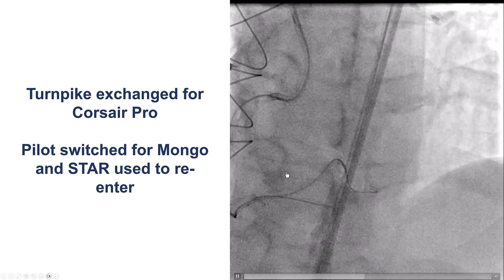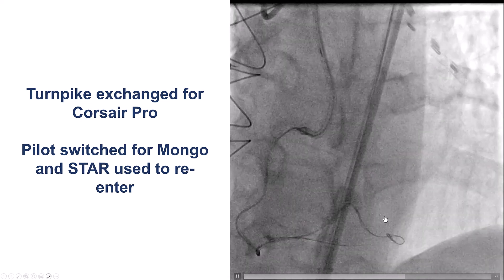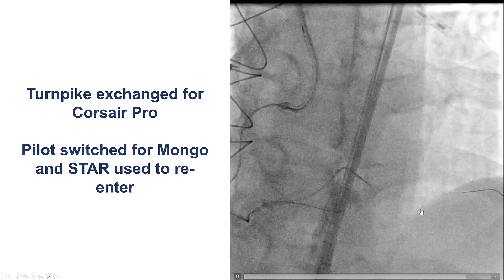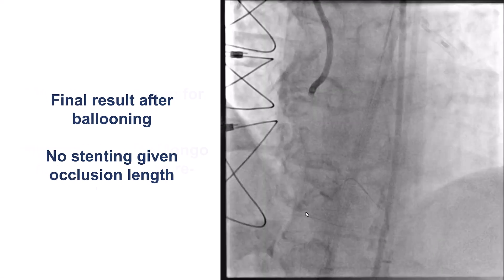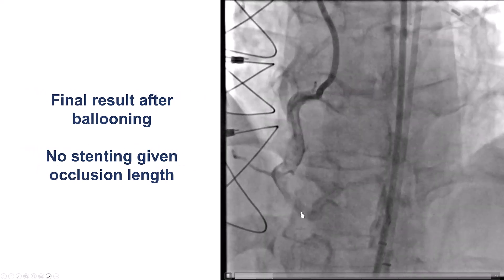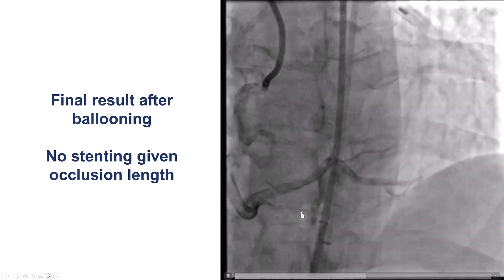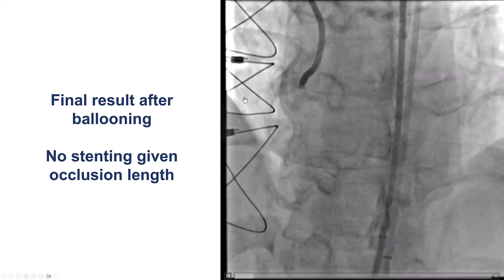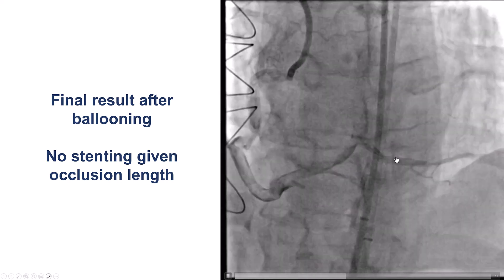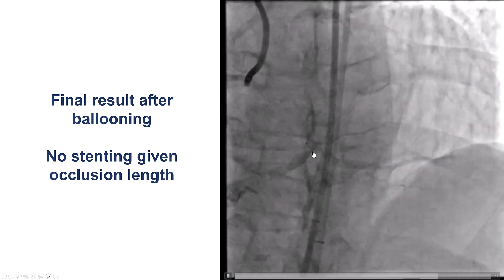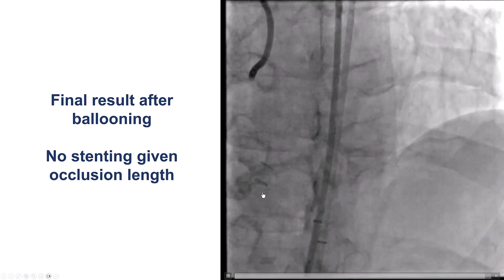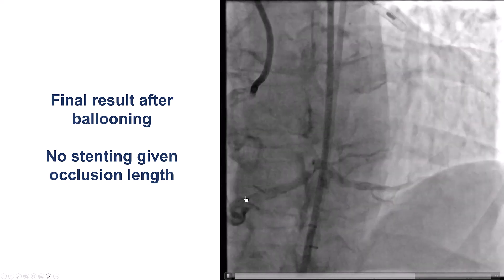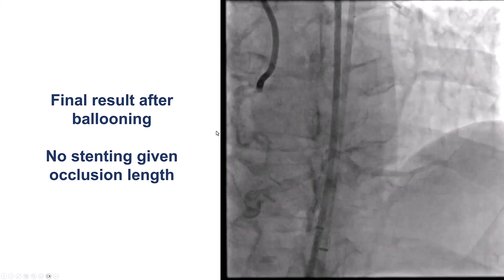We switched to a Mongo wire and then performed the STAR technique, advancing distally to restore some antegrade flow. This is how the vessel looked after balloon dilatation — there were extensive dissections throughout the vessel, but there was good flow distally, and we decided not to place a stent given the long occlusion length and the extensive dissection.